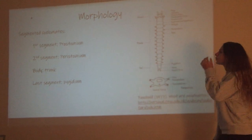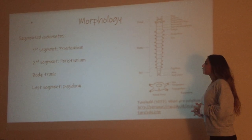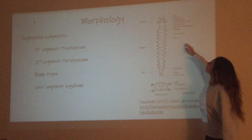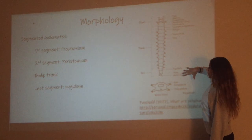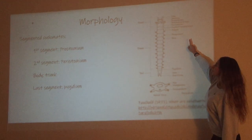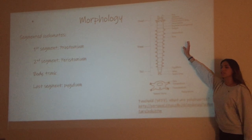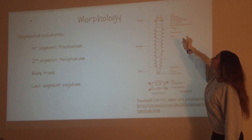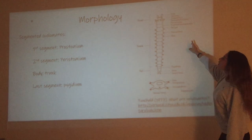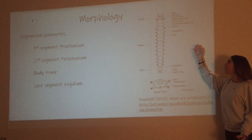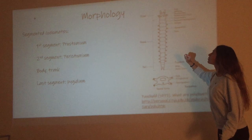The basic morphology of a polychaete is composed of segmentation — these worms are coelomates. They have three or four main parts to their body. The first segment is going to be the prostomium, which includes organs such as the antennae and the palps, which are sensory organs. Then you will find the peristomium, which is the head, and it's going to have organs such as the eyes on the dorsal side and their mouth on the ventral side.